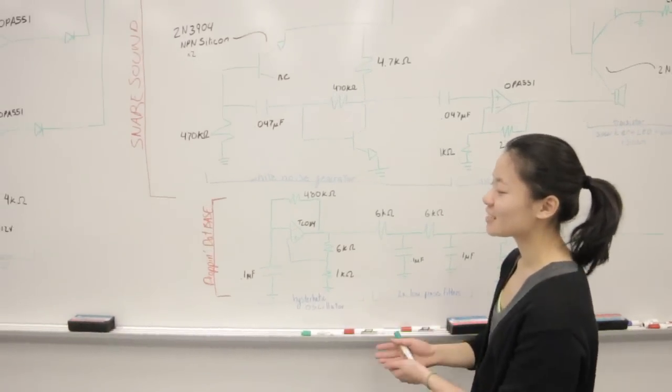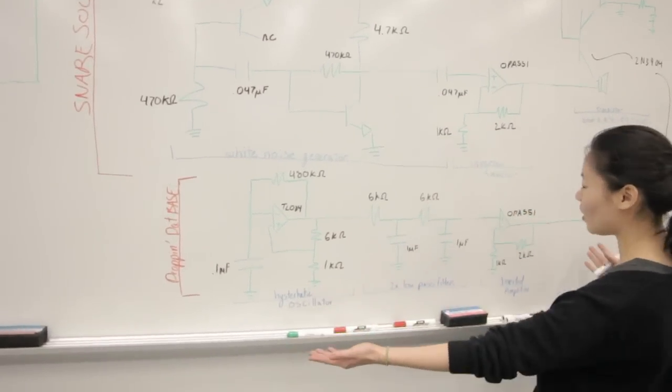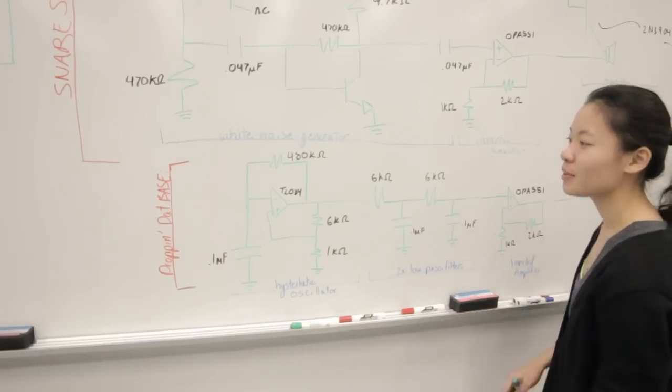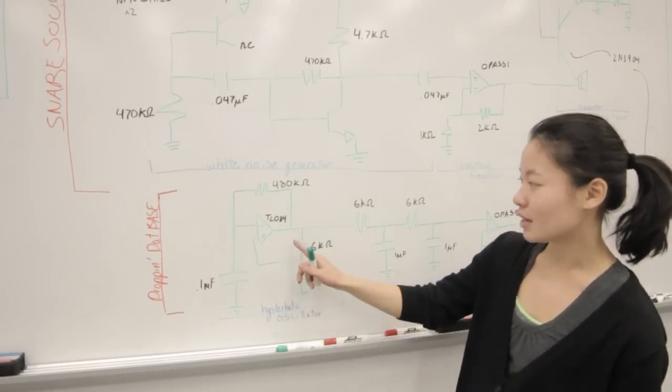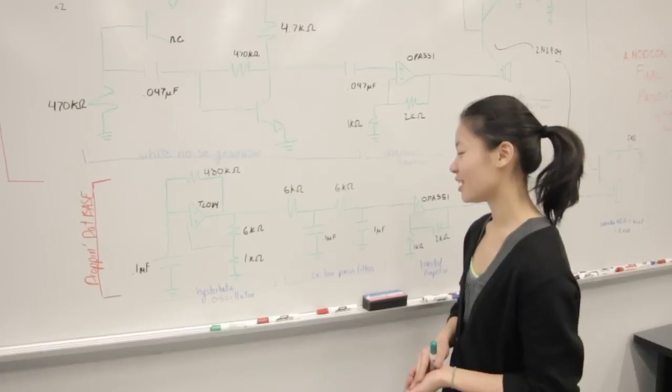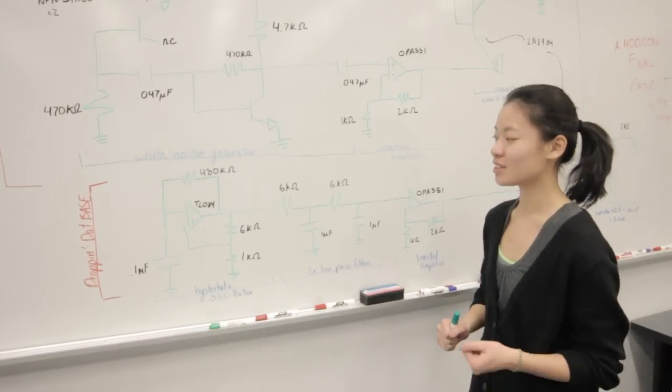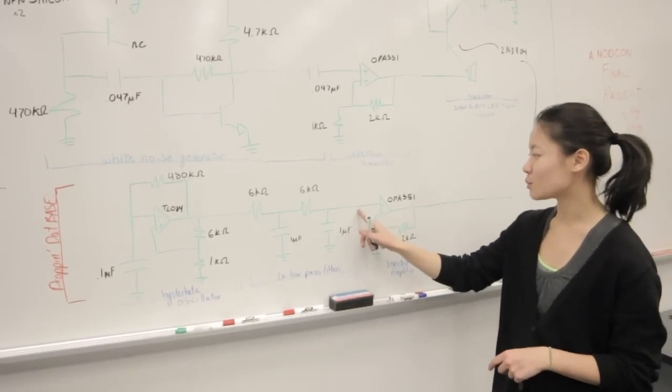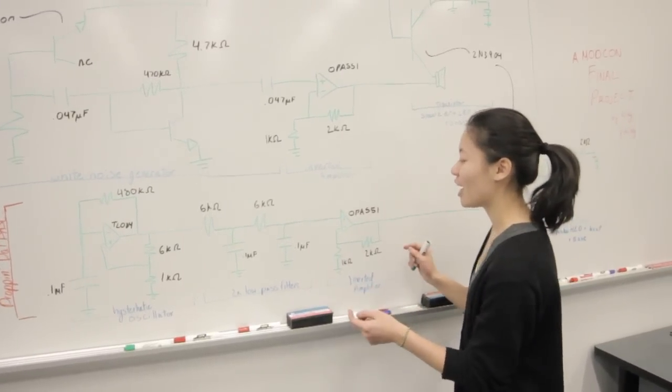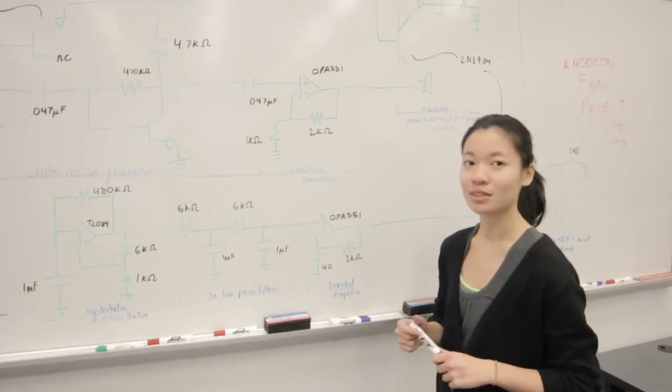And then down here is our bass noise, so all of this makes our bass. And then this is basically a hysteretic oscillator using a TLO, and it goes through these two low-pass filters to soften the sound, and then that sound from over here gets passed through this non-inverting amplifier, and that also doubles the amplitude.